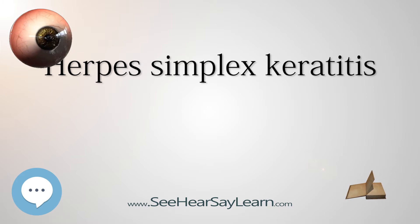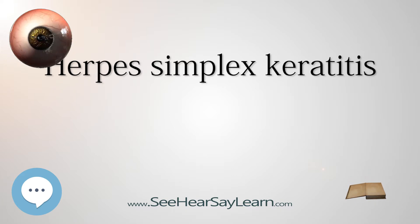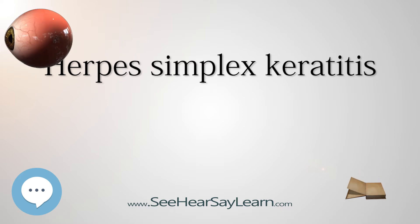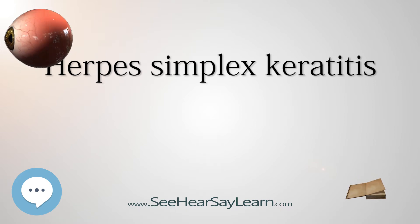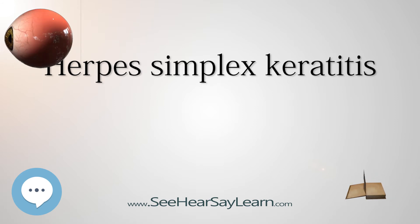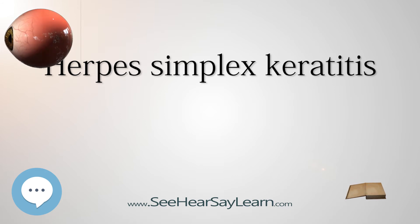Treatment of herpes of the eye differs based on its presentation. Epithelial keratitis is caused by live virus, while stromal disease is an immune response, and metaherpetic ulcer results from inability of the corneal epithelium to heal. Epithelial keratitis is treated with topical antivirals, which are very effective with low incidence of resistance, generally for 10–14 days. Acyclovir ophthalmic ointment and trifluridine eye drops have similar effectiveness but are more effective than idoxuridine and vidarabine eye drops. Oral acyclovir is as effective as topical antivirals and has the advantage of no eye surface toxicity; oral therapy is preferred by some ophthalmologists.